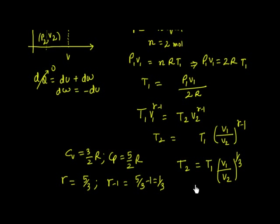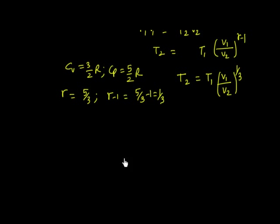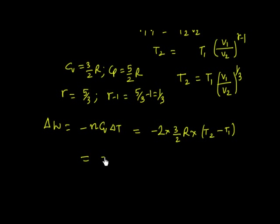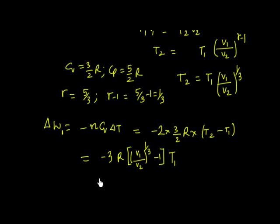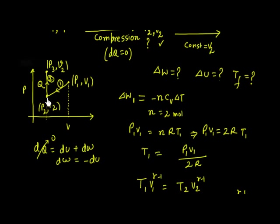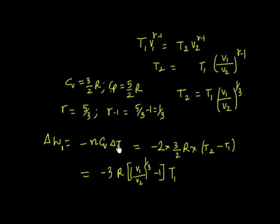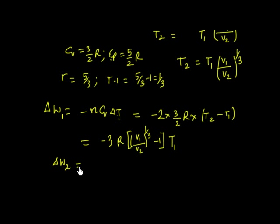Now ΔW1 = −NCVΔT = −2 × (3/2 R) × (T2 − T1) = −3R(T2 − T1). For process 2 (constant volume), DV = 0 so PDV = 0, meaning ΔW2 = 0.